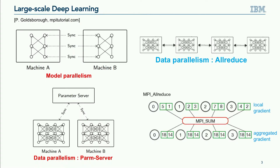For background, this is a picture from an MPI tutorial. In all-reduce, every learner has a number array — in this case, a gradient — and the all-reduce operation adds numbers element by element and shares the final result across all learners. This is a very natural mapping to stochastic gradient descent: every learner generates a local gradient, and we do all-reduce over those local gradients so that everybody has a global gradient for parameter update.